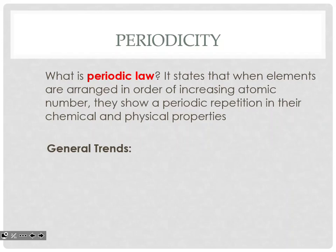What is periodic law? It has to do with when elements are arranged in order of increasing atomic number, they show a periodic repetition in their chemical and physical properties. So we're going to see these trends that happen to go with the groups or happen to go with the periods.